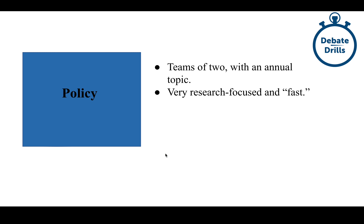In doing that, judges were rewarding what are called dropped arguments — an argument that is not directly answered. They were giving full weight to any argument that wasn't answered. Teams began to capitalize on this: if you speak more quickly, you can make more arguments, which increases the risk of your opponent dropping an argument, and the judge will reward that. Over time, those debaters became judges who were capable of understanding faster speed, and the activity gradually got faster and faster across several generations.